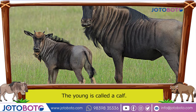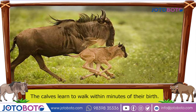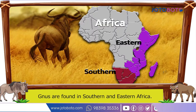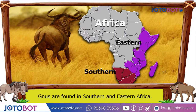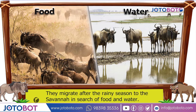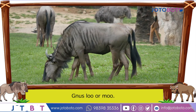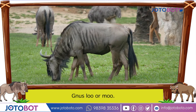The young one is called a calf. The calves learn to walk within minutes of their birth. Gnus are found in southern and eastern Africa. They migrate after the rainy season to the savannah in search of food and water. Gnus low or moo.